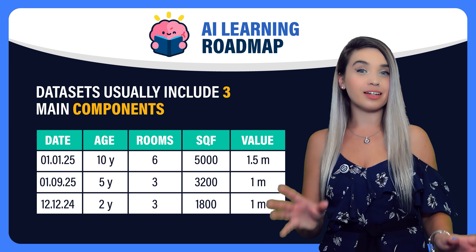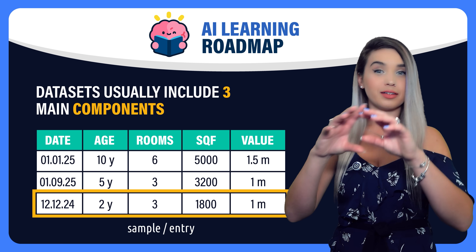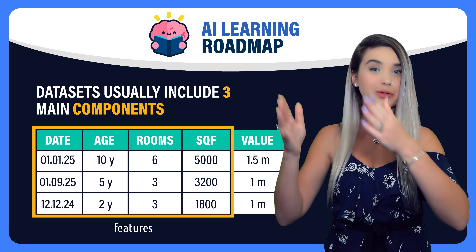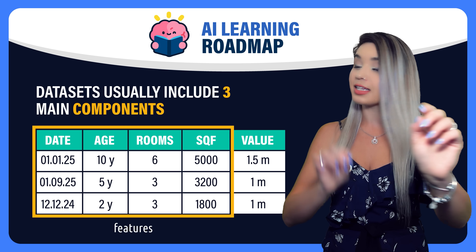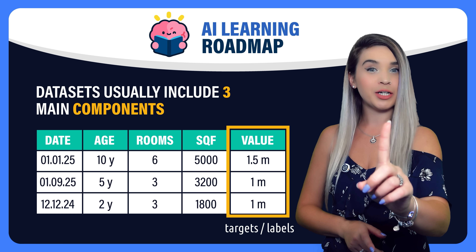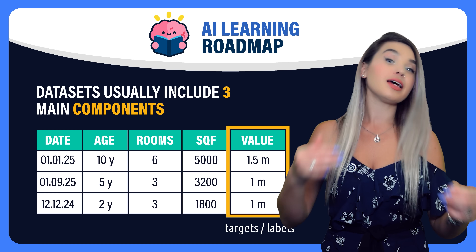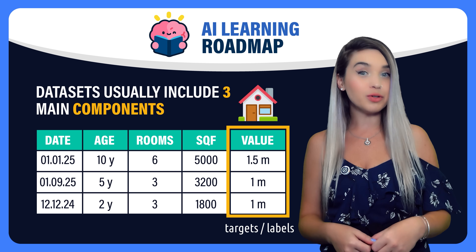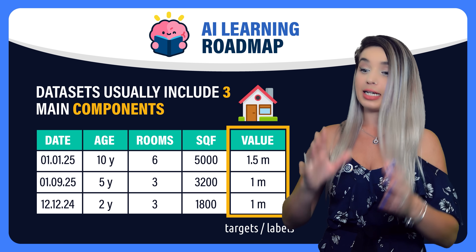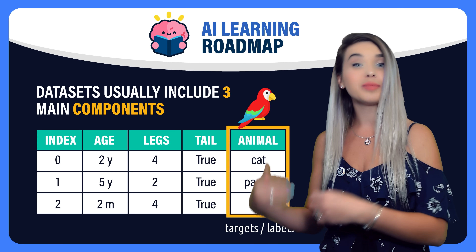The content of our data is often a table that includes the following components: samples, or the rows in our table; features, or the columns in our table — all except one; and finally, targets, also known as labels, or one special column where we store what we would like to predict. For example, if we predict housing prices in Vancouver, then our target column is the value of the house. But if we predict what animal is in a picture, then our target column is the animal name.